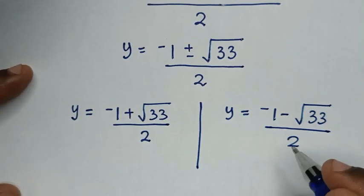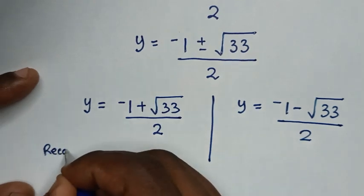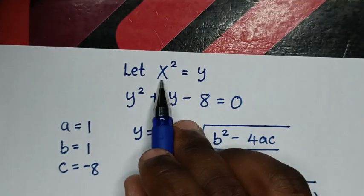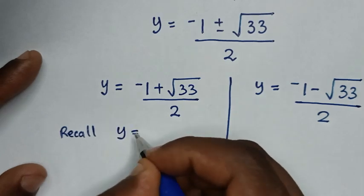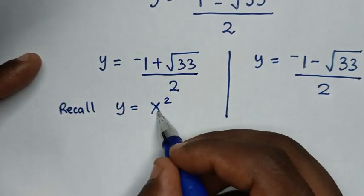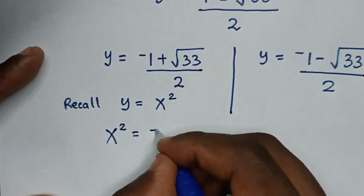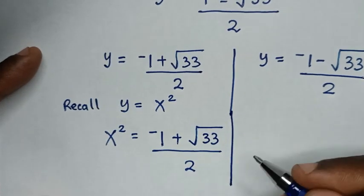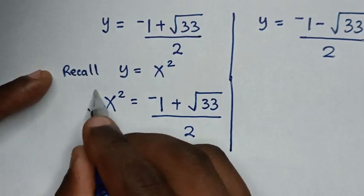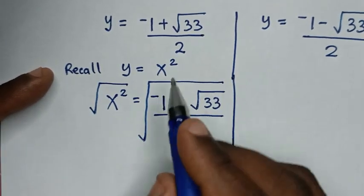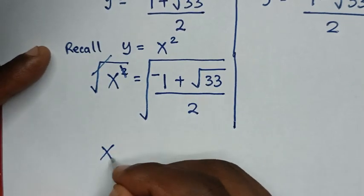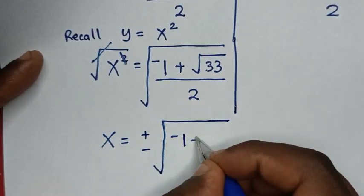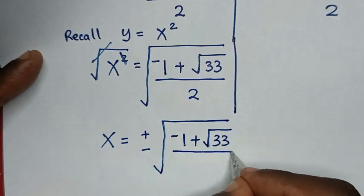But, we are supposed to find the values of x. So, we recall that before we let x square is equal to y. So, y is equal to x square. From y is equal to x square, x square is equal to negative 1 plus square root of 33a over 2a. Then, from here, to get x, we'll apply square root of both sides. So, this square root will cancel square, then it will be x is equal to plus or minus square root of negative 1 plus square root of 33a over 2a.